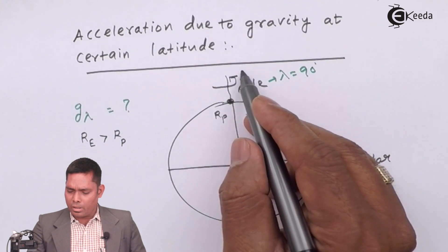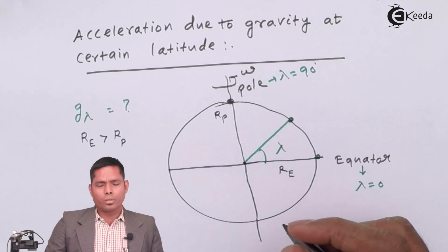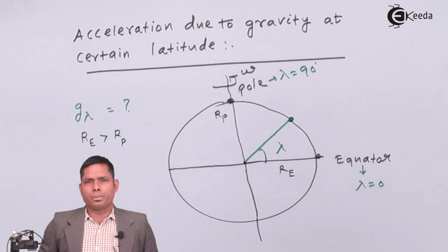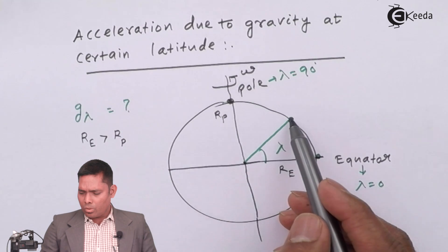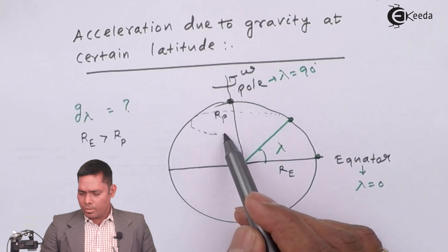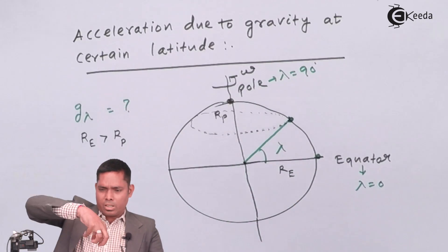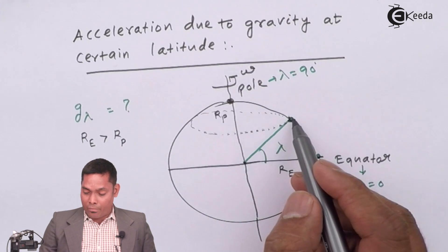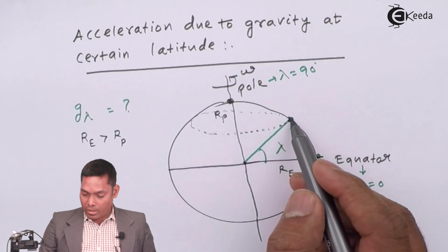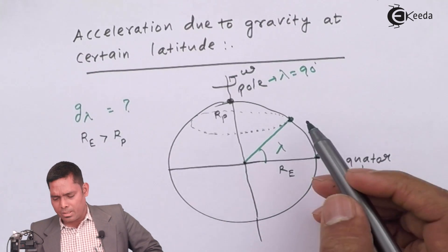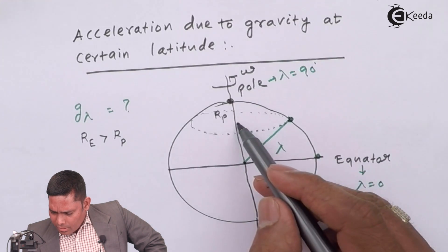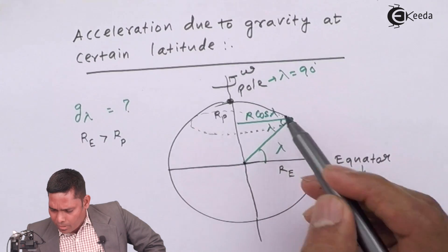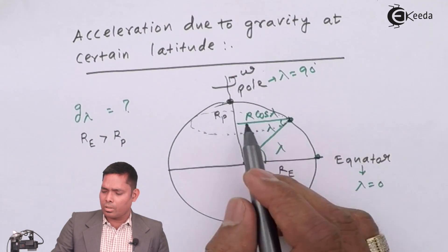The earth is spinning with angular velocity omega. As the spheroid is spinning, every point on the planet also spins with the same omega, following a circular path on the surface. So this point also performs circular motion. When the latitude angle is lambda, the radius of the circle in which the object spins is R cos lambda.